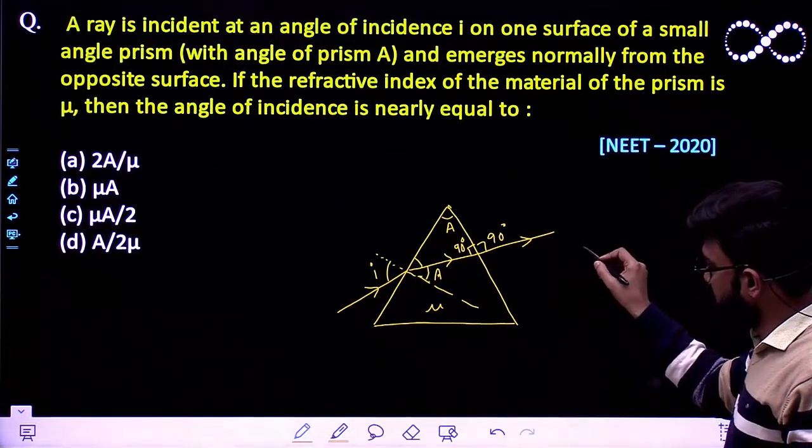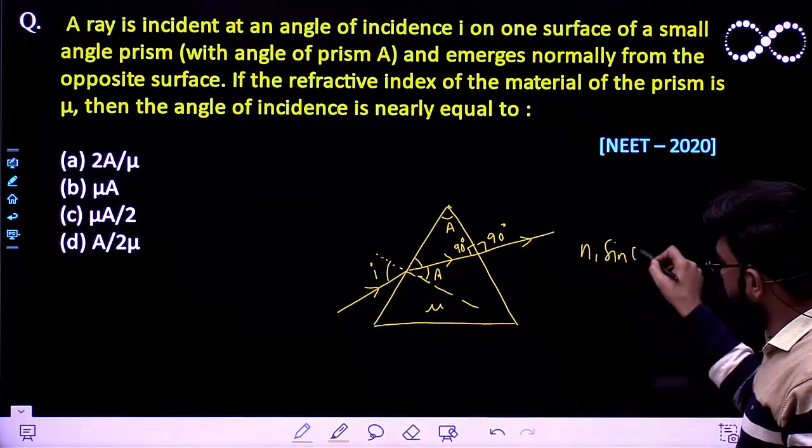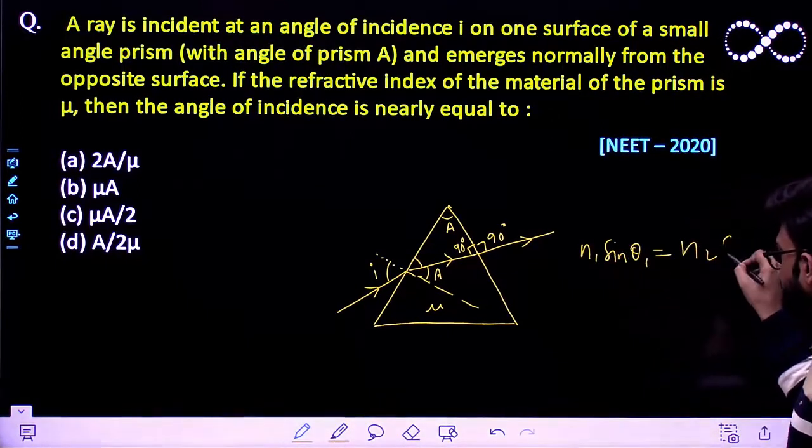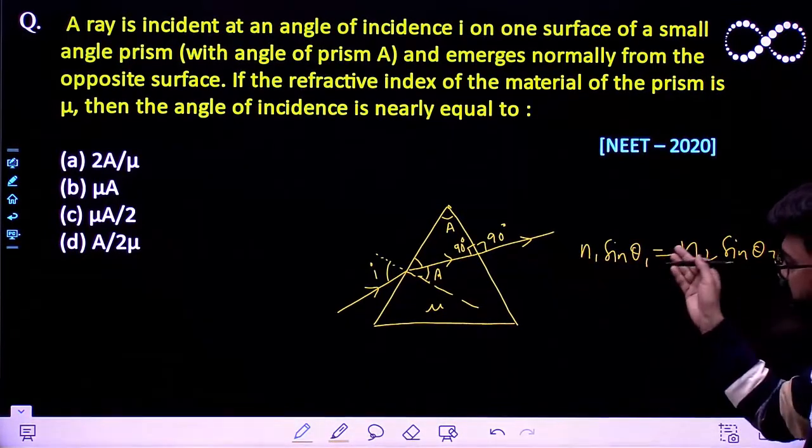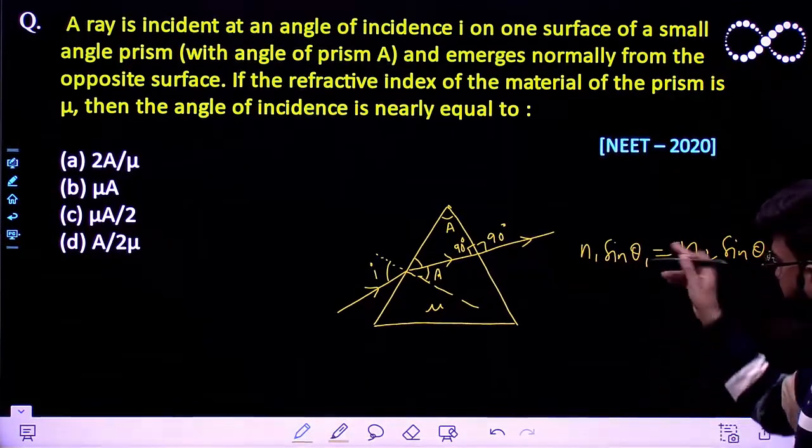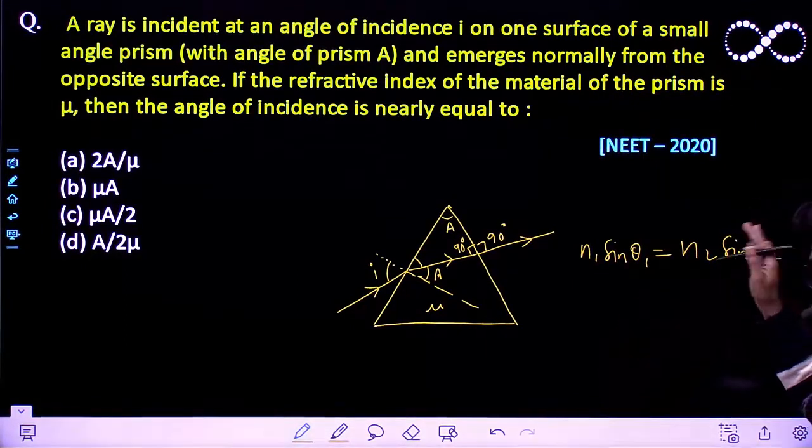You can easily write Snell's law as N1 sin theta 1 must be equal to N2 sin theta 2, where N1 is the refractive index of one medium and angle of incidence in medium 1, and N2 is the refractive index of second medium and angle of refraction in the second medium.